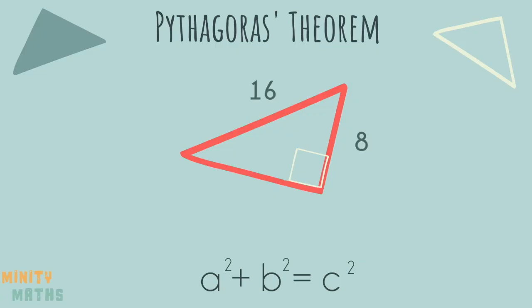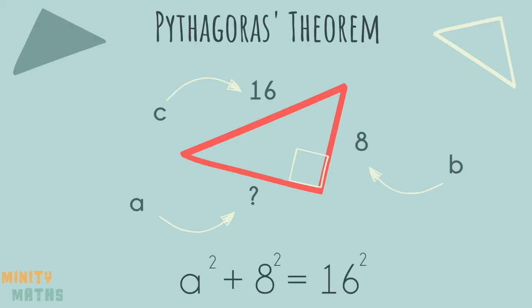Sometimes you will have been given the length of c but will need to find either a or b. We use the same formula so in this instance we change b and c to the relevant numbers leaving a for us to find.